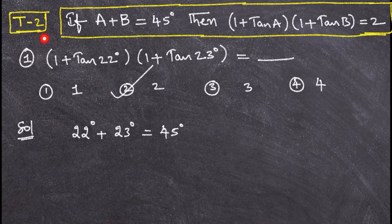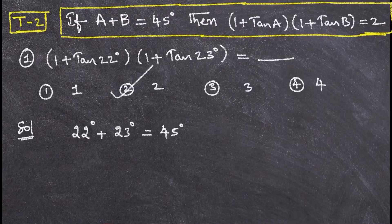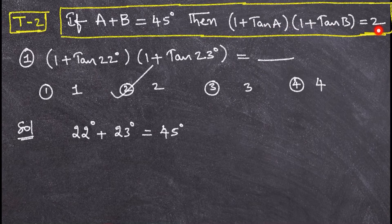Observe this trick. If a plus b is 45 degrees, then (1 + tan a)(1 + tan b) = 2. At the end of this video, I am going to prove why (1 + tan a)(1 + tan b) equals 2 when a plus b is 45 degrees.